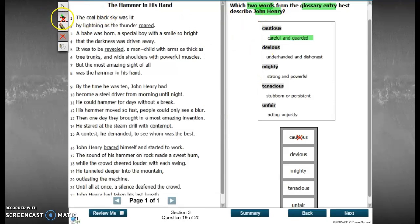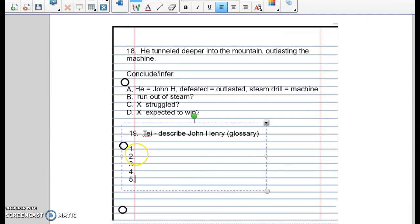Next one, devious. Underhanded and dishonest. Do you see anything in there that shows that maybe he's cheating, he's lying, he's dishonest? I don't see anything in there. So for those two, I'm going to put X because I don't see any evidence of those.